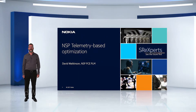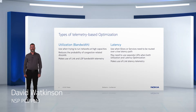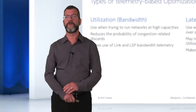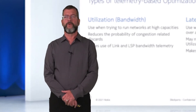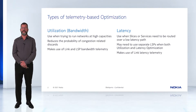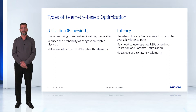Welcome back. We will now dive into the details of NSP's telemetry-based optimization. There are two types of telemetry-based optimization supported today. The first is utilization-based telemetry, which allows you to run your network at high capacities, reducing the probability of congestion-related discards. This makes use of measured link and LSP bandwidths. The second is latency-based telemetry, which is used when slices or services need to be routed over a low latency path. This makes use of measured link latencies.